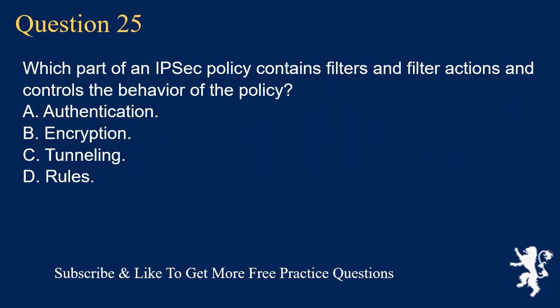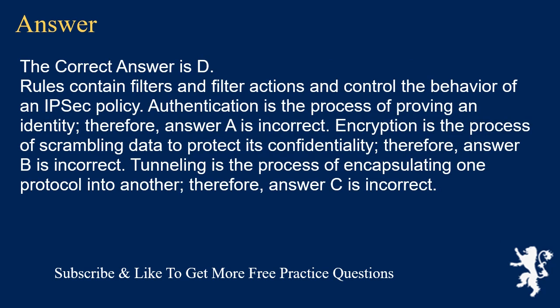Question 25. Which part of an IPsec policy contains filters and filter actions and controls the behavior of the policy? A. Authentication. B. Encryption. C. Tunneling. D. Rules. The correct answer is D. Rules contain filters and filter actions and control the behavior of an IPsec policy. Authentication is the process of proving an identity. Therefore, answer A is incorrect. Encryption is the process of scrambling data to protect its confidentiality. Therefore, answer B is incorrect. Tunneling is the process of encapsulating one protocol into another. Therefore, answer C is incorrect.